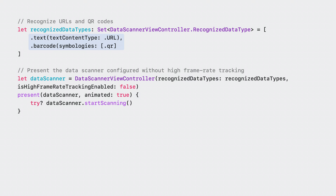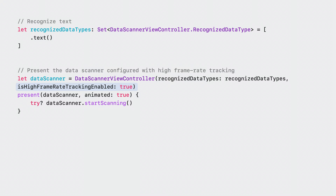With optical flow tracking, the highlights feel much more stable and grounded than before. Optical flow tracking comes for free whenever you use the data scanner view controller. However, it is only available when recognizing text and not machine readable codes. You are also required to scan for text without a specific text content type set, and ensure high frame rate tracking is enabled, which is conveniently the default. The data scanner provides great text tracking, and if your use case allows for this configuration, the new optical flow tracking can enhance it even further.